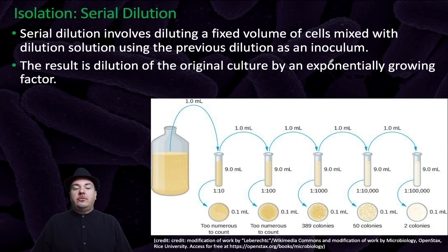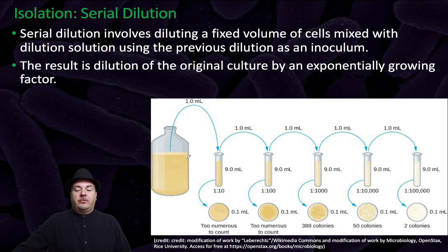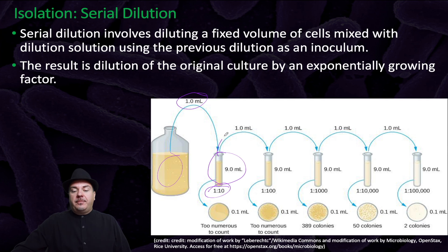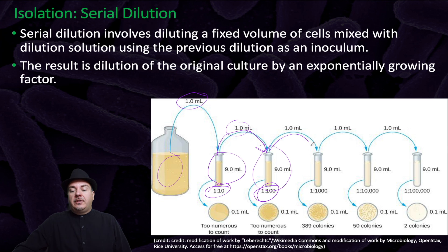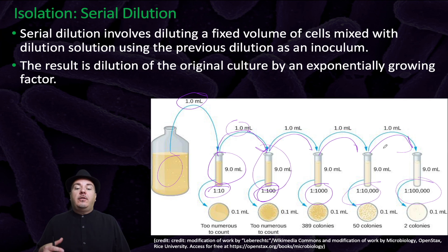Other methods of isolation involve serial dilution. Serial dilution involves diluting a fixed volume of cells mixed with dilution solution, using the previous dilution as an inoculum. The result is dilution of the original culture by an exponentially growing factor. For example, take one milliliter from a culture and combine it with nine milliliters of dilution solution — that dilutes it by a factor of 10. Then take one milliliter from that and add it to nine milliliters of clean dilution solution, diluting it by an additional factor of 10, giving a 1-to-100 dilution so far. You continue doing tenfold dilutions serially to get lower and lower concentrations of cells in the liquid media.